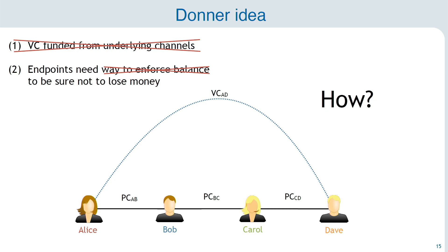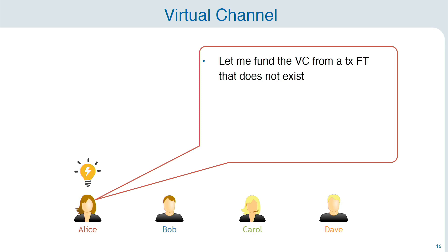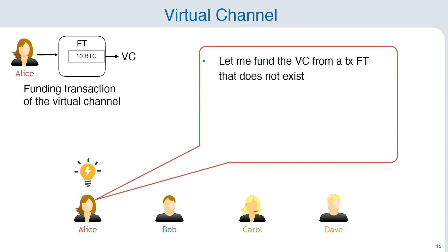The main idea is as follows. Alice wants to create a virtual channel with Dave. What she does is she says: hey Dave, let me fund the virtual channel from a transaction called a funding transaction. But this transaction does not exist — it's created off-chain by Alice. So Alice says, let's pretend that this transaction exists anyway, and we keep using it for our virtual channel.